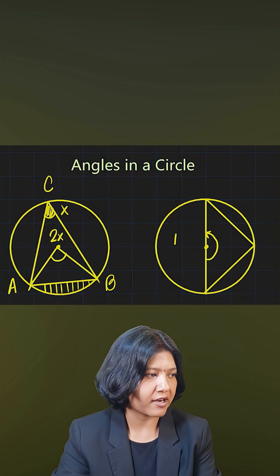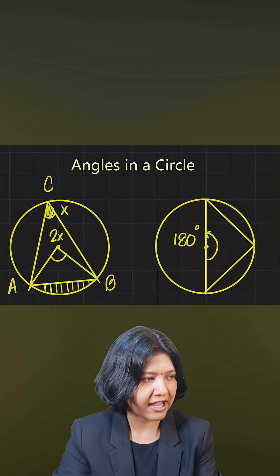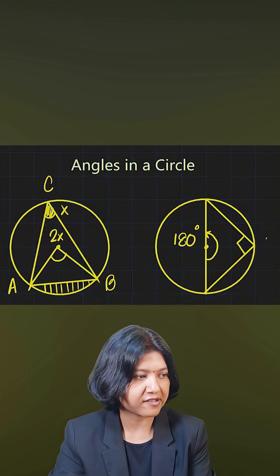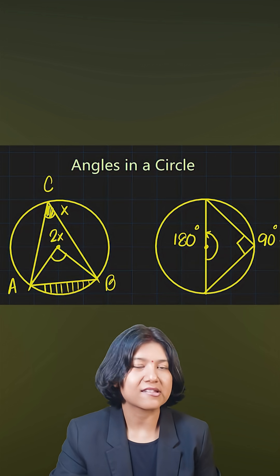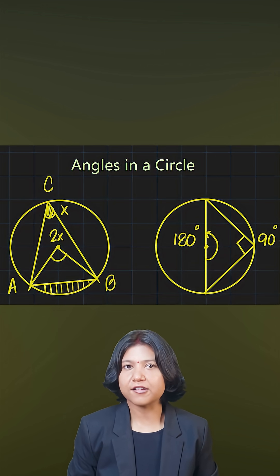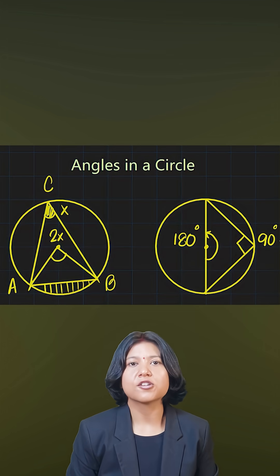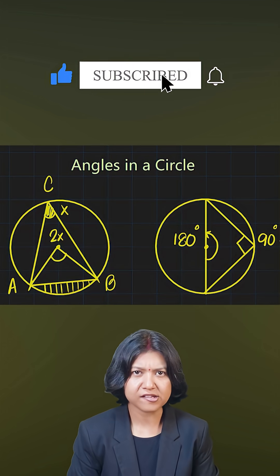Hence the angle made on any point in the same segment is always half of that, so therefore this angle has to be 90 degrees. We say this theorem as angle in a semicircle is always a right angle. These are the main important rules we have for angles. Apart from this, we have a lot more.